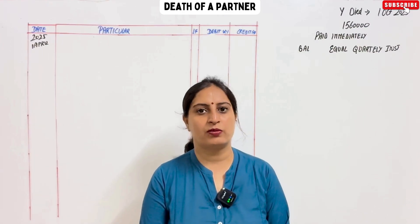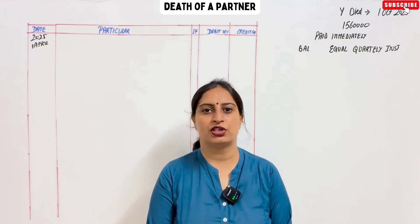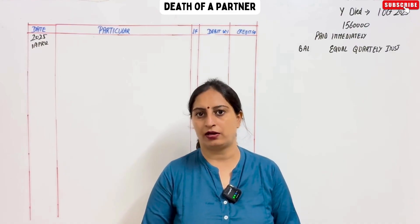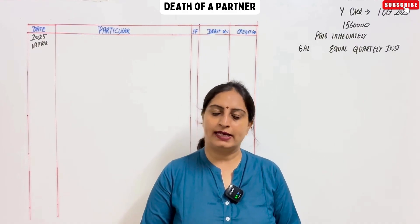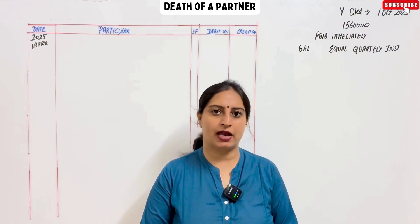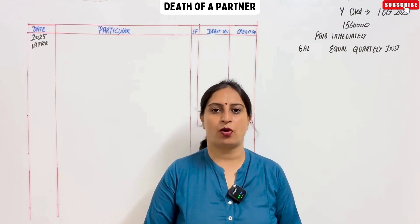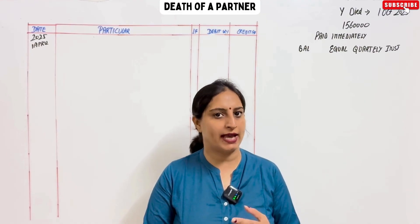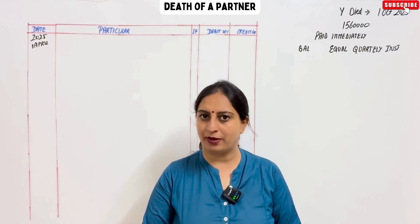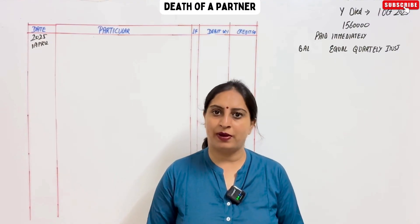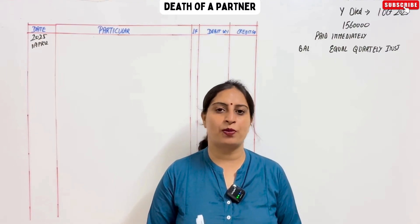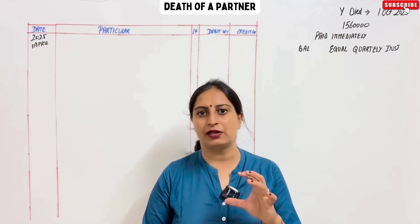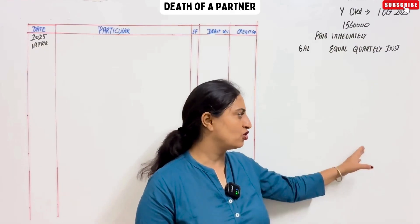Hello everyone, welcome back to my channel. I am Pooja Sitiya. Our chapter is called Death of Partner. We will take examples from T.S. Kriwal's book. Today, our topic is that when you have a death of a partner, the executor has to pay the payment — how to apply the installment and how to apply the interest on it. I will tell you a simple way: we will make a chart.